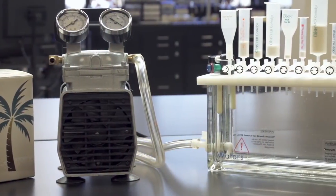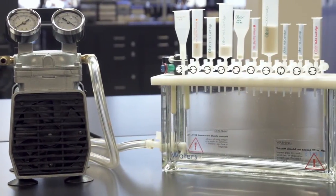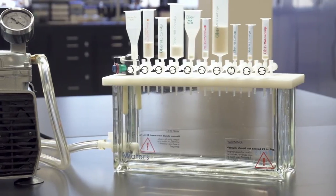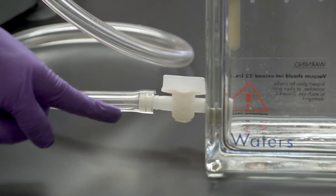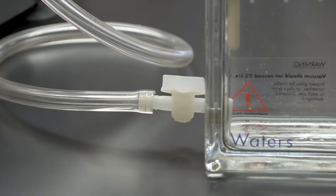This short 2-minute video will demonstrate the correct setup and usage of the 20-position cartridge manifold. First, connect the hose from the regulated vacuum source to the 20-position extraction cartridge manifold.